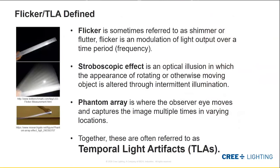Flicker is sometimes referred to as shimmer or flutter. Flicker is a modulation of light over a time period — a frequency — where it's happening again and again quite quickly. The physiological response humans have to Flicker is between 0 to 80 hertz, meaning 80 times per second. It's happening fast, but not extremely fast where the human eye would really pick it up. That's what's really considered Flicker.